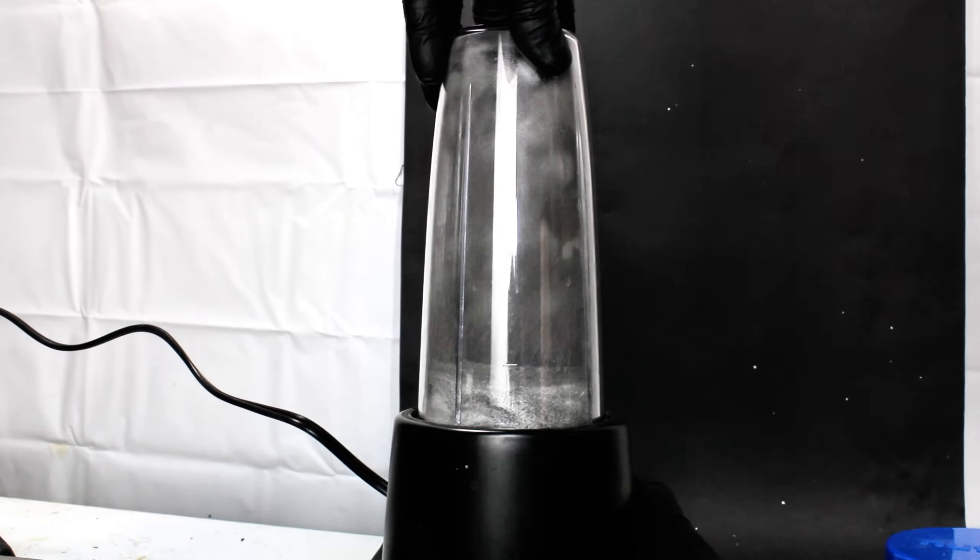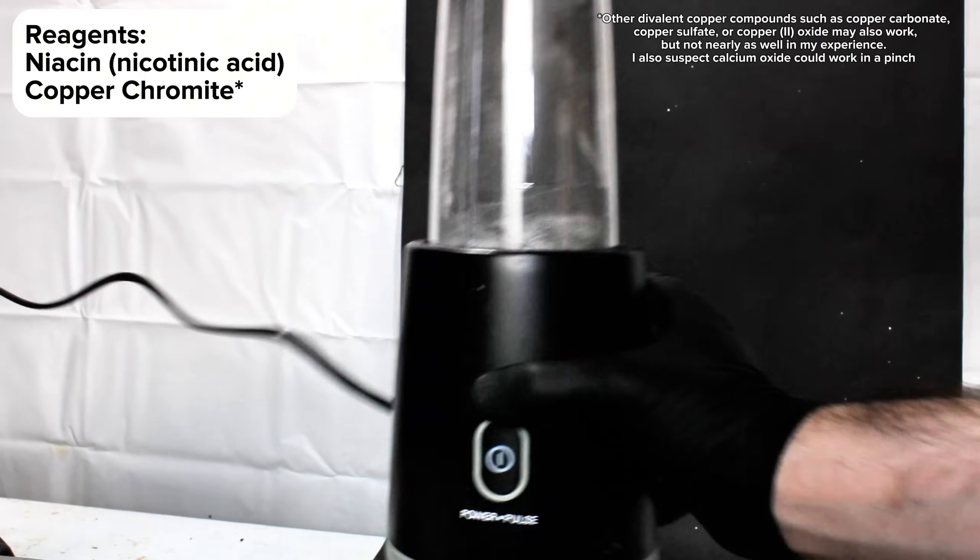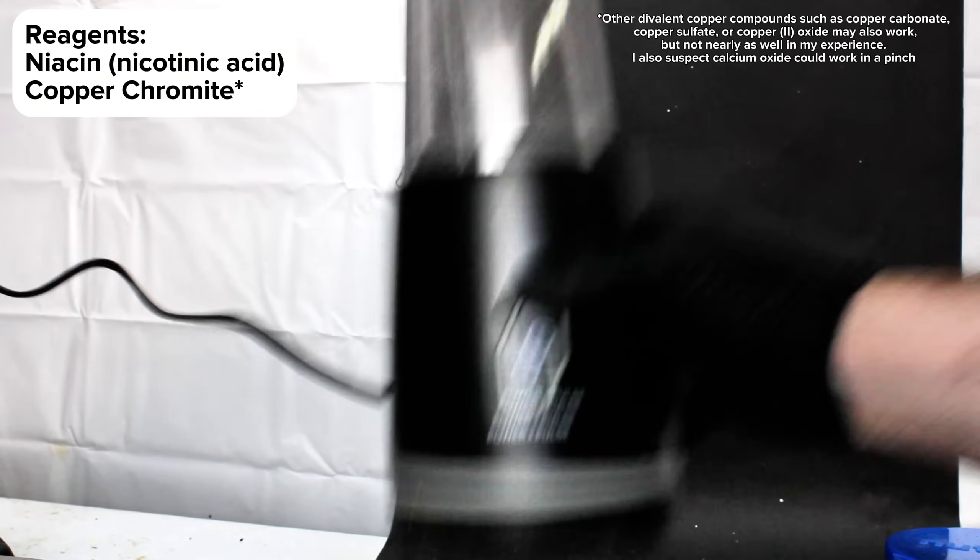Now to make some pyridine, I only needed two chemicals: niacin and copper chromite. The pyridine will be produced by the decarboxylation of niacin with copper chromite acting as a catalyst.